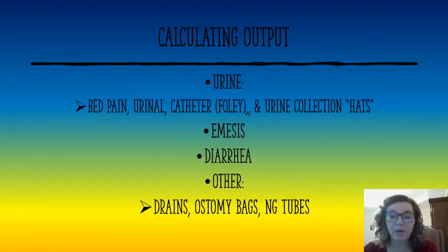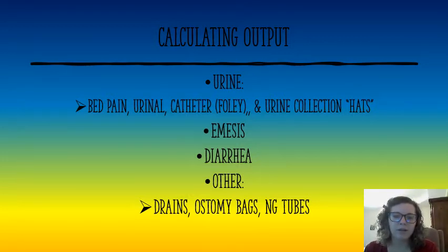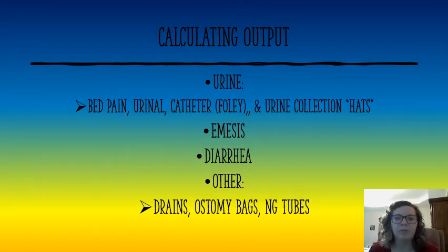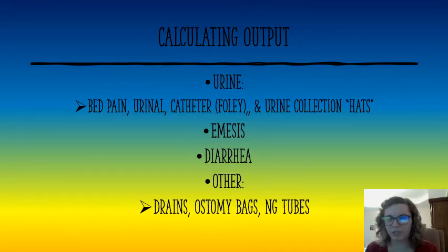Output includes anything that comes out of the patient's body — urine, emesis (vomit), diarrhea, or anything else coming out through a drain, ostomy bag, or NG tube. There are multiple ways to collect urine: a bedpan, a urinal, a Foley catheter, or collection hats placed in the patient's toilet.